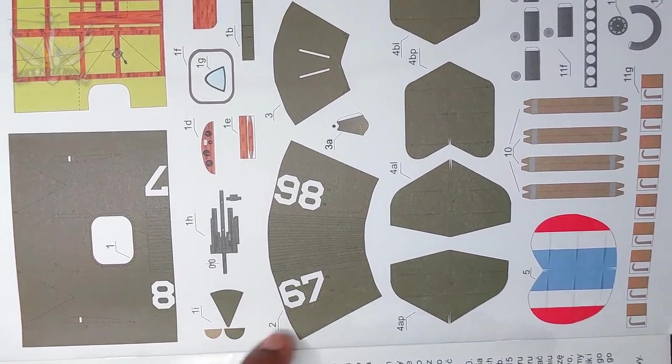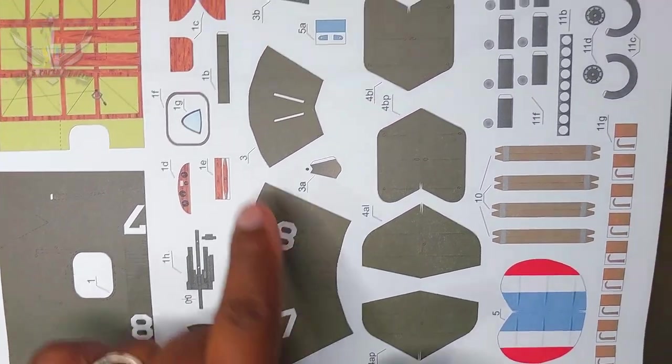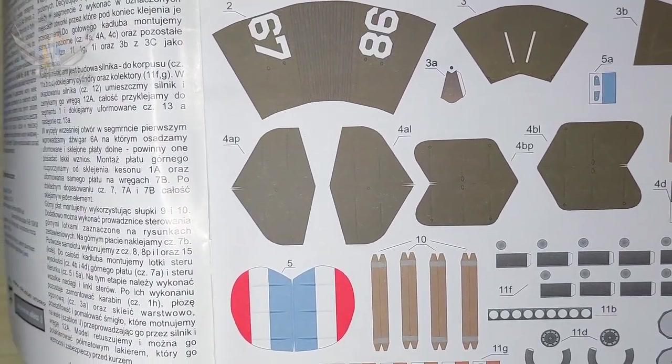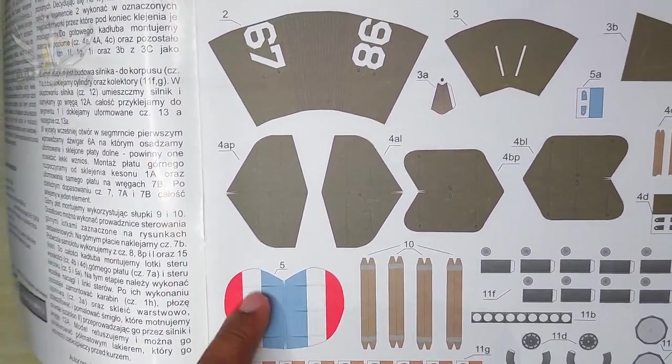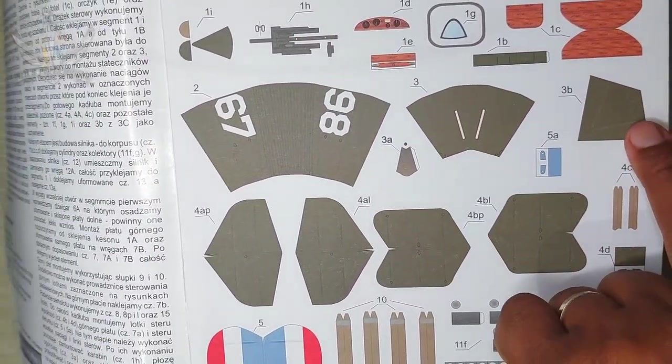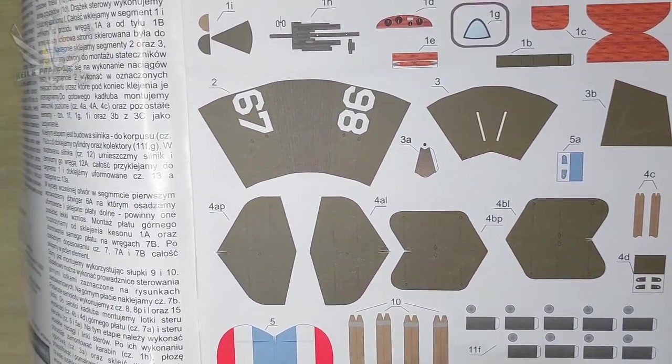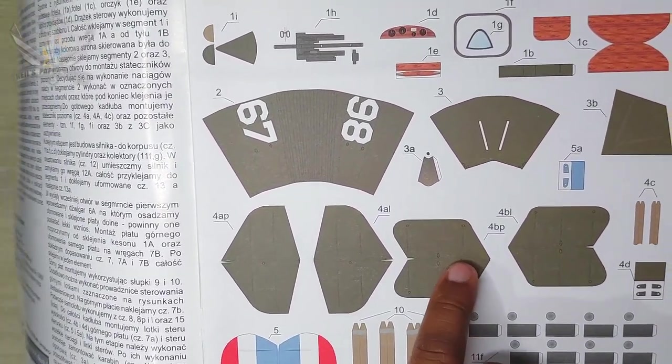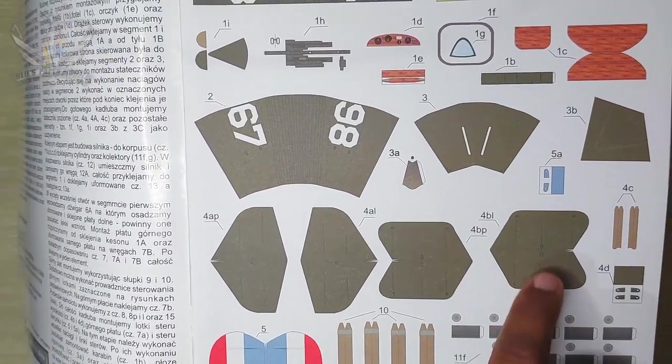I would highly recommend this as a step up from your Fiddler's Green and your other basic kits. You can see the stabilizer, the rudder, and that's the fin. You can also see the elevators and the stabilizer.